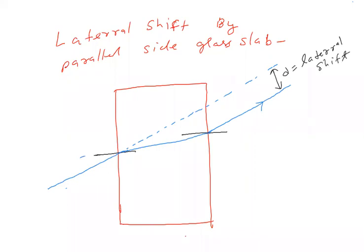अब यह lateral shift को हम लोग calculate करना चाहते हैं। जानकारी में अपने पास Snell's law है, ज्यादा कुछ है नहीं। Air अगल-बगल मान रहे हैं, one side और glass है। Snell's law की चर्चा करूंगा तो सबसे पहले याद दिलाऊंगा — यदि हम I कह देते थे, तो normal से जो बनेगा दूसरी तरफ वह R है। यहां R, तो इधर भी R — और यहां R तो यहां I बनेगा ही बनेगा।